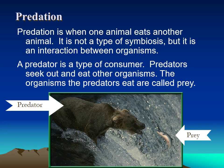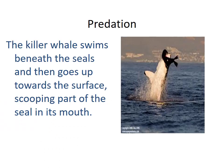Predation is when one animal eats another. It is not symbiosis because it's not a permanent close relationship — it's quick action. The predator is the one who does the hunting or eating — in this case the bear — and the prey is the one who gets eaten — in this case the fish. The killer whale swims beneath the seals and scoops them into its mouth, so the whale is the predator and the seal is the prey.